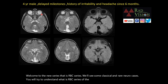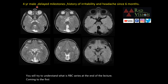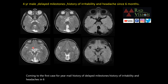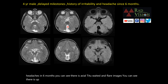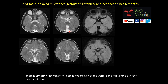Coming to the first case: a 4-year male with history of delayed milestones and irritability and headaches for 6 months. On axial T2 and FLAIR images, you can see there is an abnormal fourth ventricle, hypoplasia of the vermis, and the fourth ventricle is seen communicating with the cisterna magna.